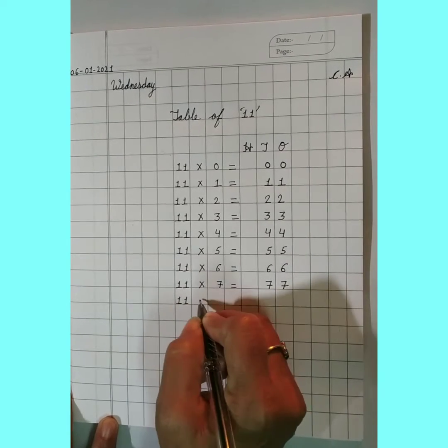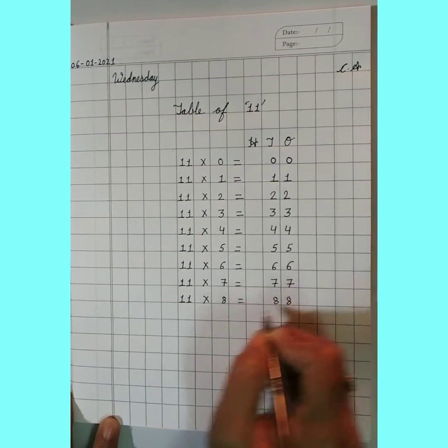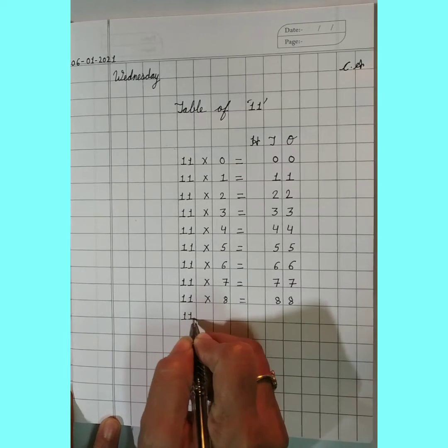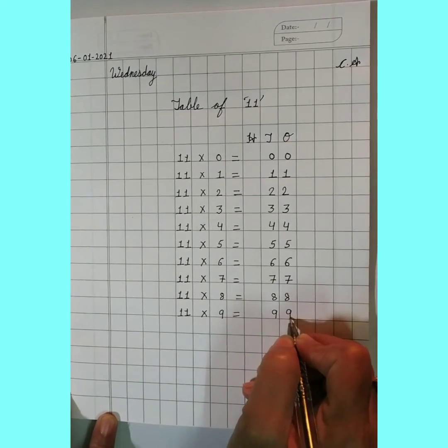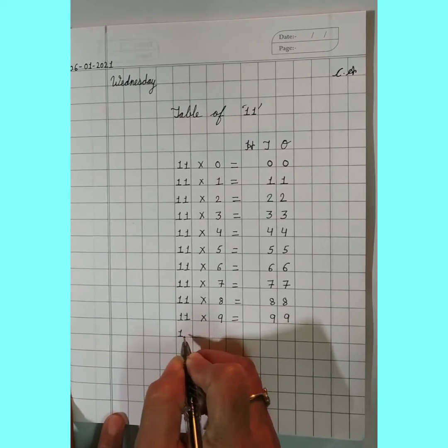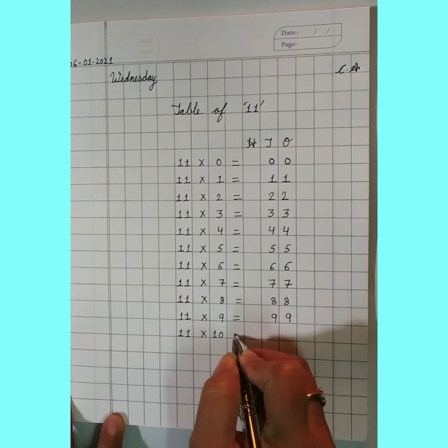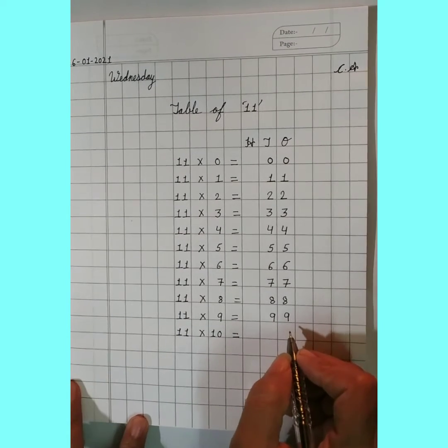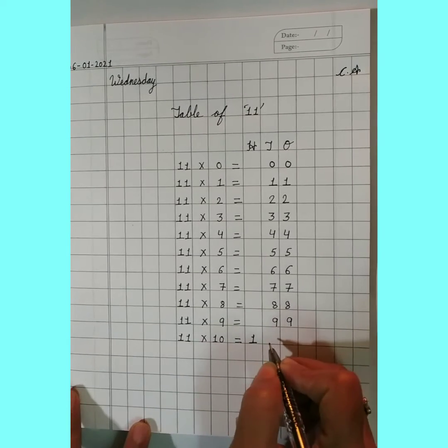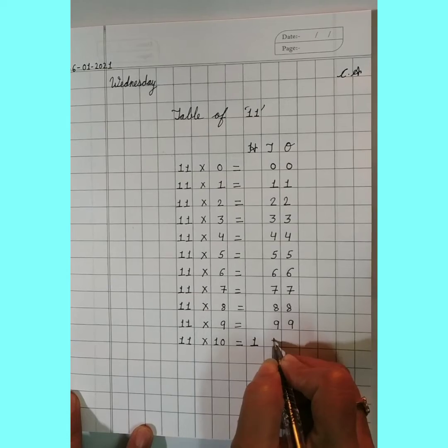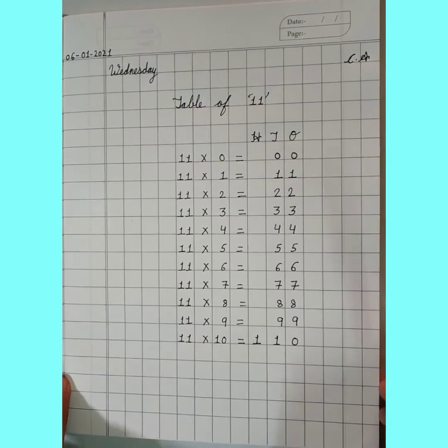11 by 8 equals 88. 11 by 9 equals 99. And in the last, 11 by 10 equals 110. We will write down 1 in hundreds place and 1 1 0.